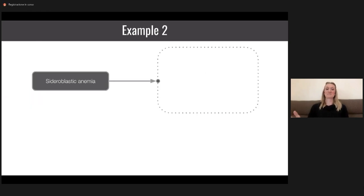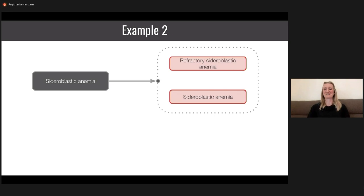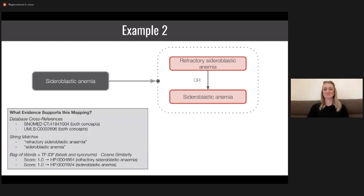Example two: how do we map the concept sideroblastic anemia? In this case, a mapping might align on synonyms. We align on refractory sideroblastic anemia as well as sideroblastic anemia. Because we map two synonyms with equal likelihood, we say it's OR, and the OR here matters because of how we might want to represent this mapping in terms of OWL expressivity. We have evidence to support this. We aligned on database cross-references. We had two exact string matches to both concepts, and we also had a perfect score when we're thinking about cosine similarity between our bag of word embeddings to both concepts. Really solid evidence to support both of these concepts.